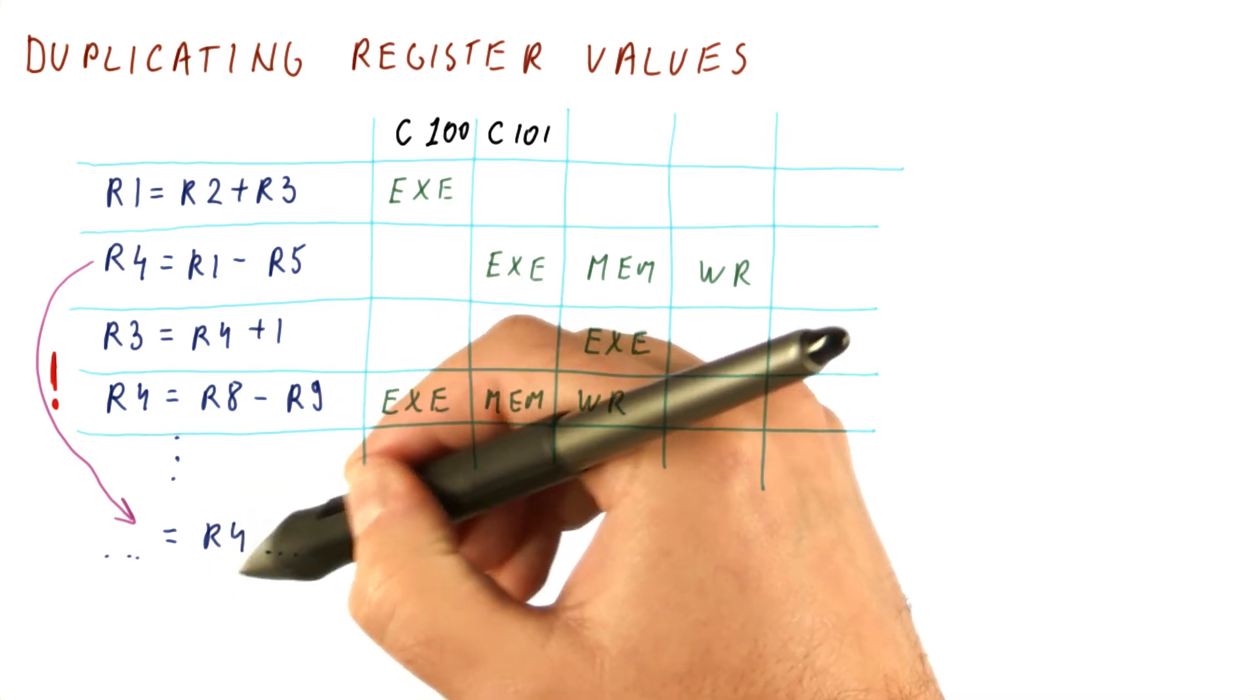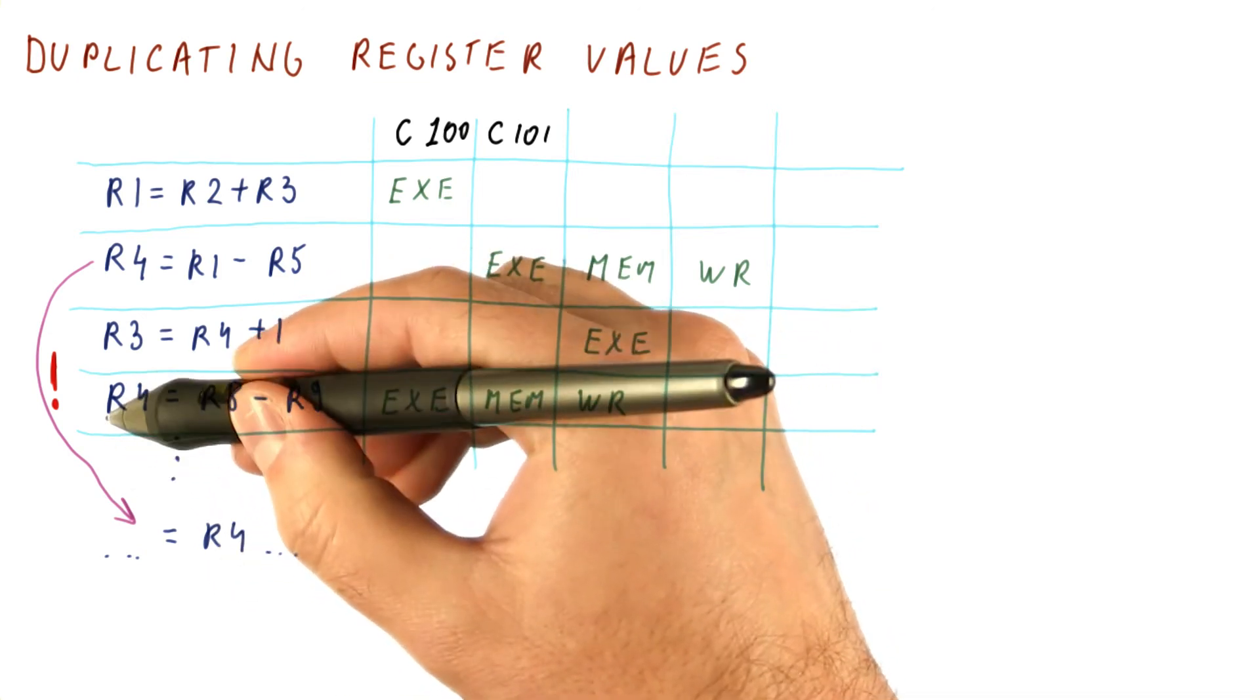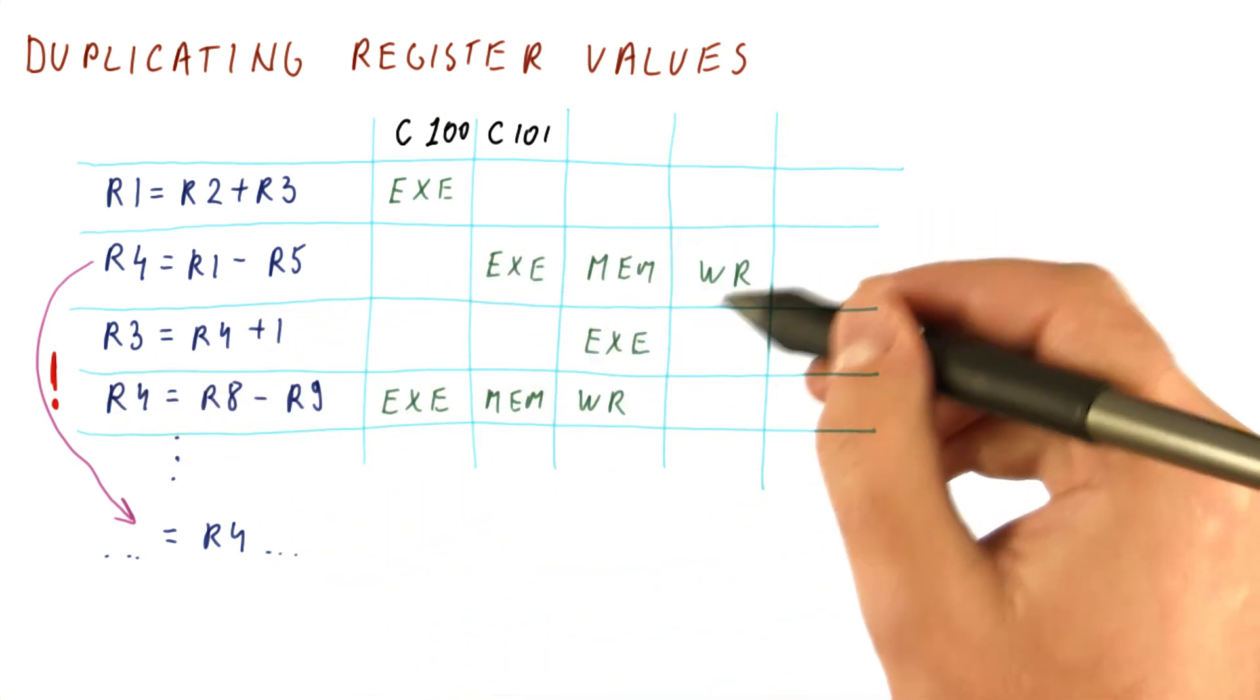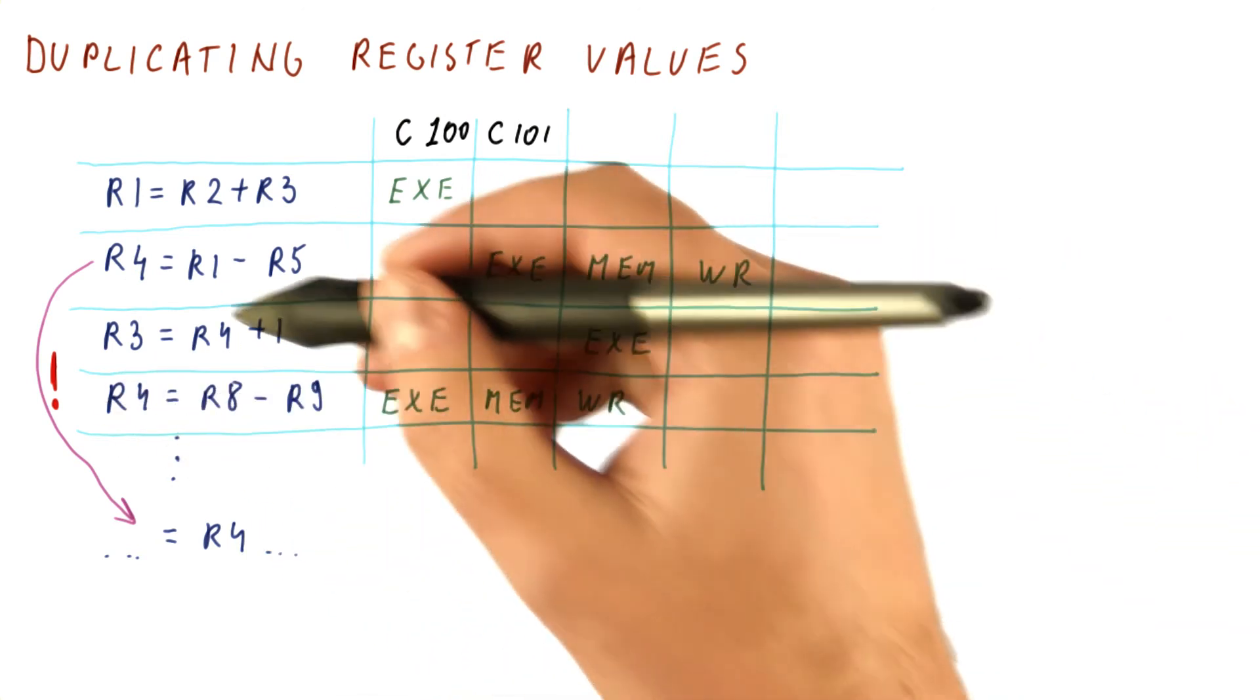So in this case, we will search for R4 and find this one and this one, and this is the latest one that we should be using. That requires two versions of R4 to exist.